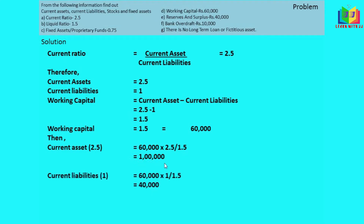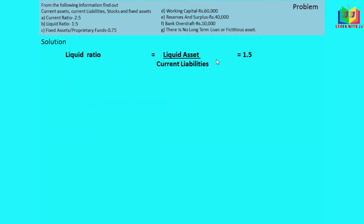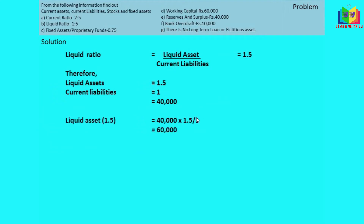This is the value of current assets. For current liability, we know working capital equals current assets minus current liabilities equals 60,000. With current ratio 2.5 to 1, one proportion equals 40,000, so current liabilities equal 40,000 and current assets equal 1,00,000.